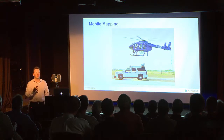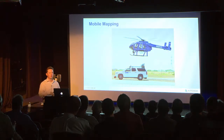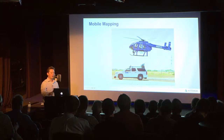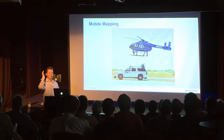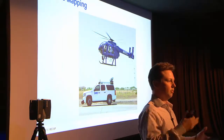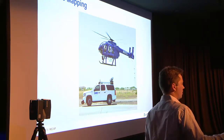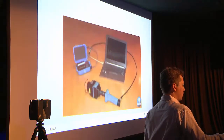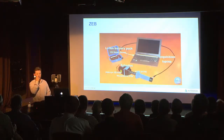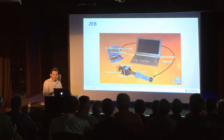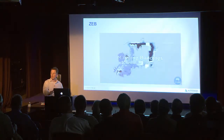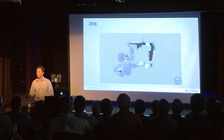Going from those more static systems into mobile, you've got systems that are able to incorporate kinematics and movement while scanning. The more common ones are captured from airborne platforms or from the roadway. But like all things, we're starting to see a whole variety of new innovative products coming out for capture. One of my favorites is called Zeb — the Zebedee, from Australia. It illustrates really well the basic principles of how kinematic scanning works.